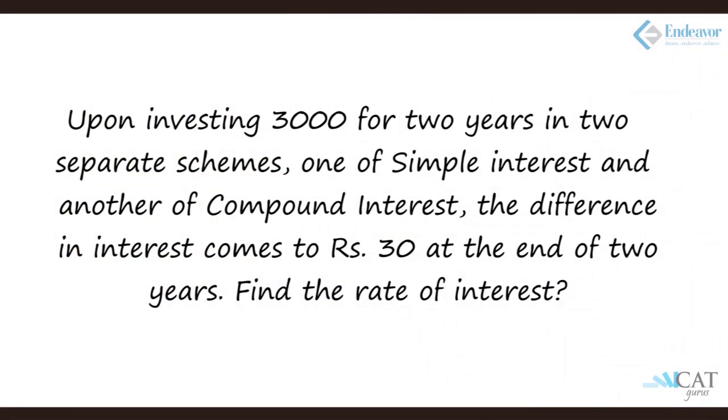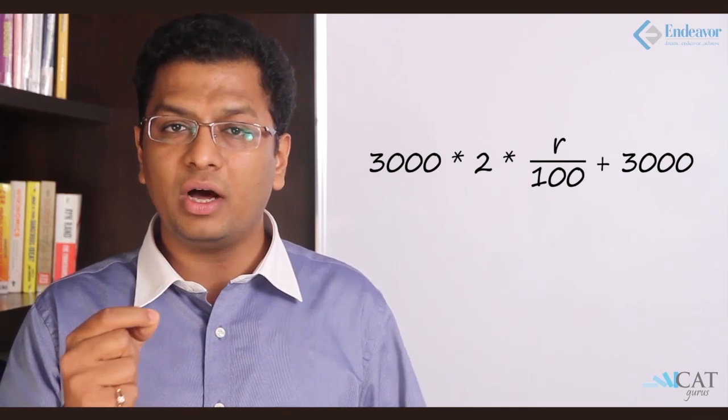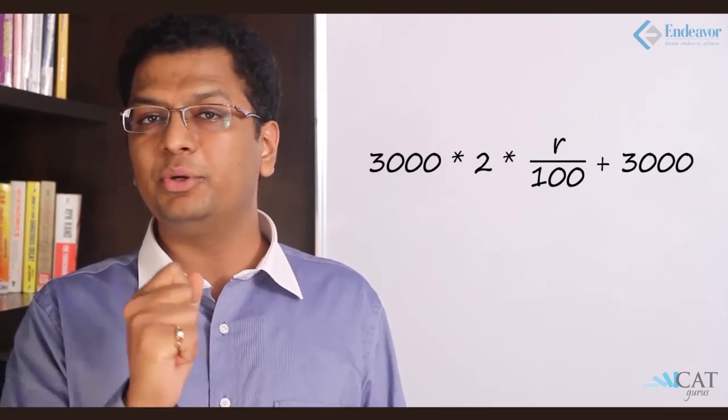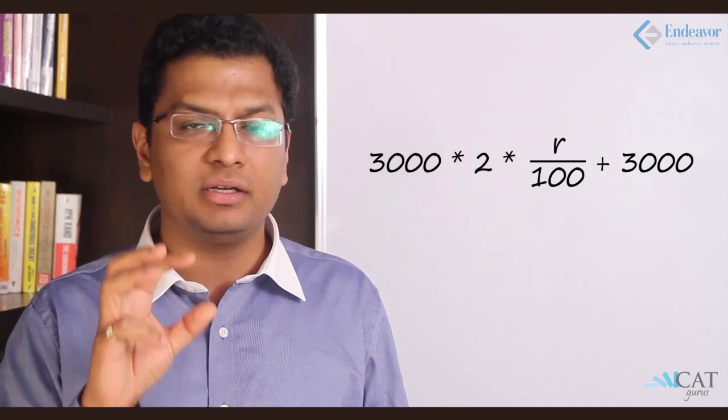Another example: investing three thousand rupees for two years in two separate schemes — one simple interest and one compound interest — gives a difference in interest of thirty rupees. Find the rate of interest. Simple interest is always less than compound interest over two years. The compound interest formula gives the total amount: 3000 × (1 + r/100)², while simple interest gives only the interest: 3000 × 2 × r/100.